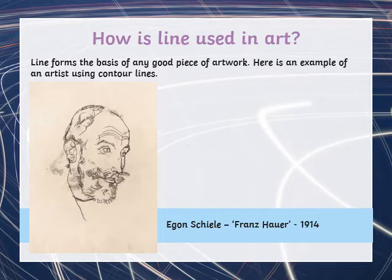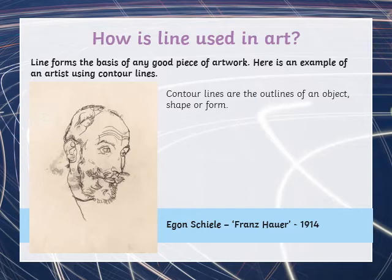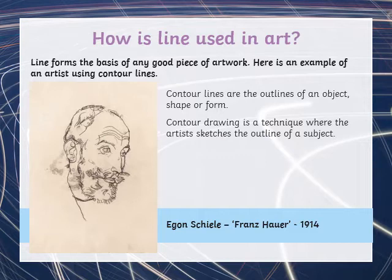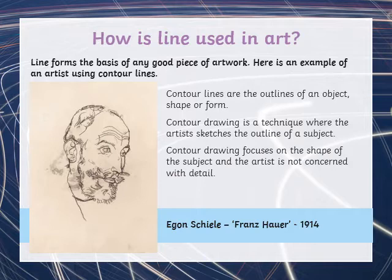So how is line used in art? Line forms the basis of any good piece of artwork — it's kind of your starting point. Here is an example of an artist using contour lines. Contour lines are the outlines of an object, shape or form. Contour drawing is a technique where the artist sketches the outline of the subject, focusing on shape without being concerned with detail. Basically, it's the outline of the drawing without any detail added in, and some artists use this as a style in their artwork altogether. The French word 'contour' actually means outline.